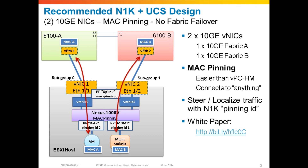Here I've provided a pretty simplistic design of just two vNICs, and we've provided segregation between virtual machines and management traffic. You can do this for other types of traffic as well through defining subgroups, defining pinning IDs, and using MAC pinning as the recommended forwarding mode for Nexus 1000V when you're attaching to UCS.